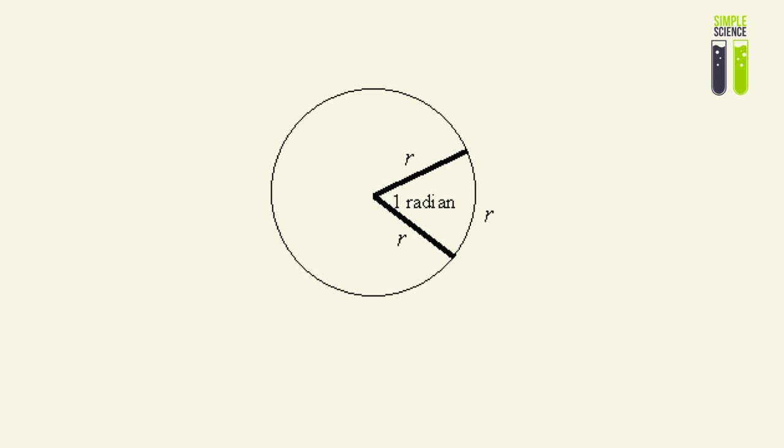And that brings us to a very important concept called the radian. What is a radian if we're going to use it as a measure? A radian is the angular displacement where the arc length is equal to the radius. And how do we find this angle?